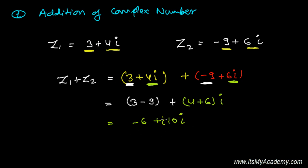Some people write i before the number — it doesn't matter, both ways are the same. So this is the very simple way to add two complex numbers.